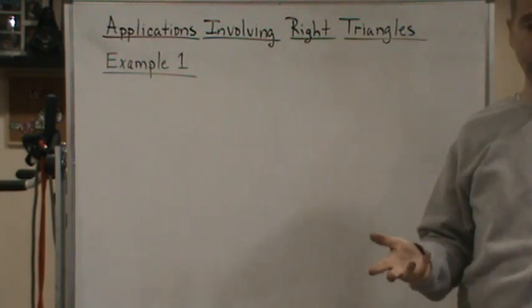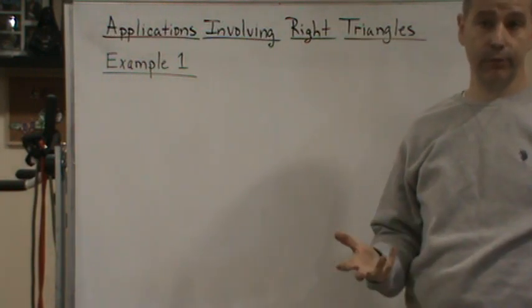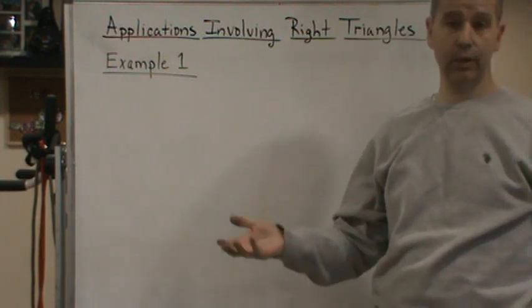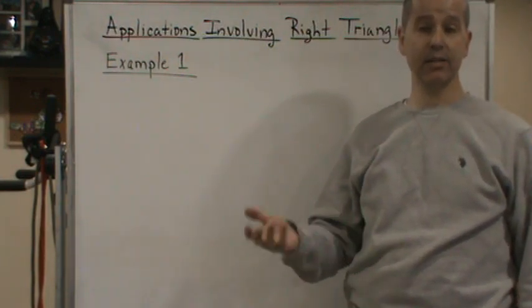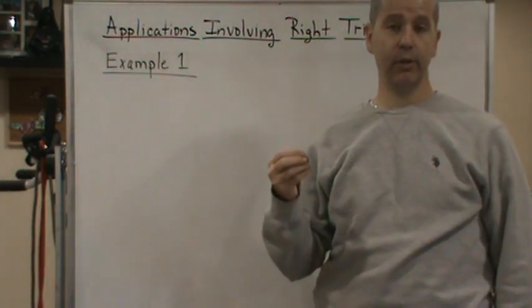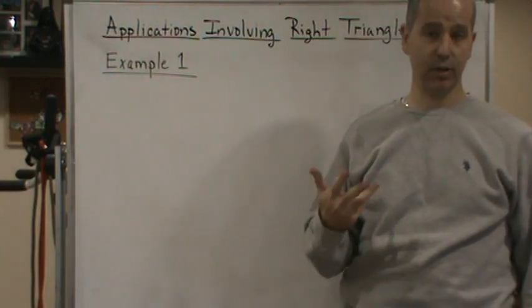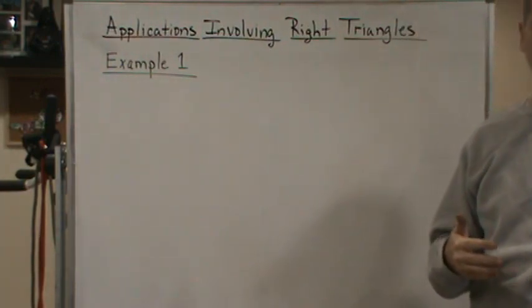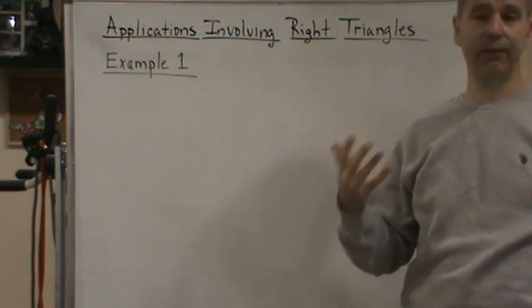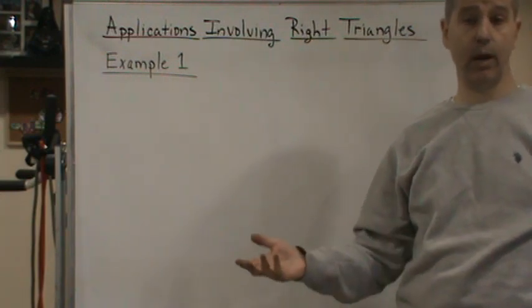So there are many trigonometric applications that do involve solving for a right triangle. For example, you might be given an angle, an acute angle, and one of the sides of the triangle, and you're asked to solve for one of the missing sides, or you're given two sides of the right triangle and you're asked to solve for an acute angle. For example, in this example that I'm going to do, it involves an angle of elevation, which will give us a right triangle in this case.